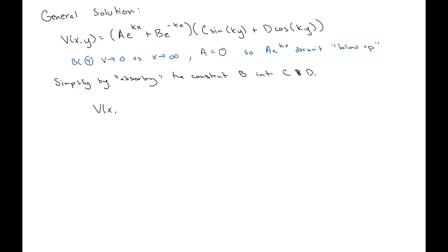So, I'm going to have now two terms: C e to the negative kx times sine of ky plus D e to the negative kx times cosine of ky.